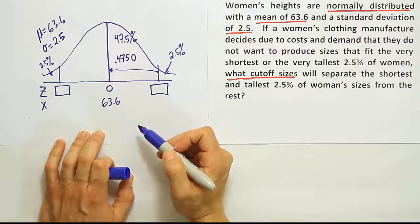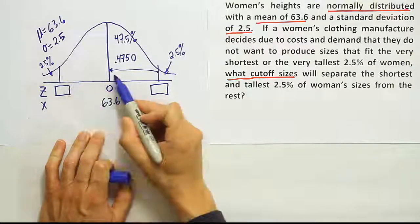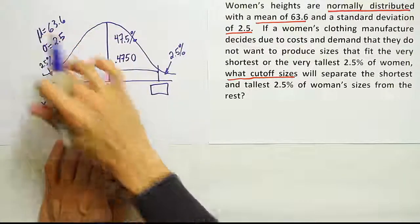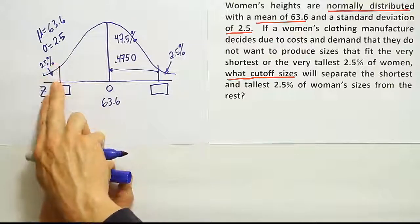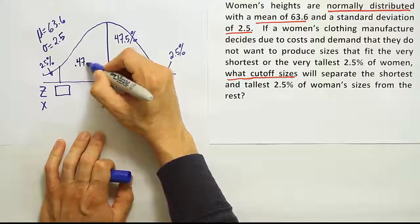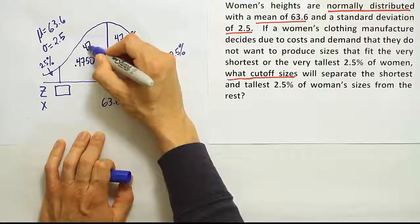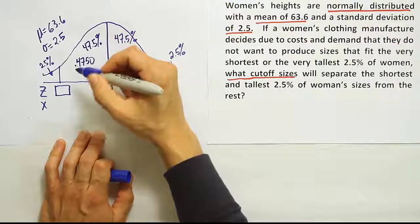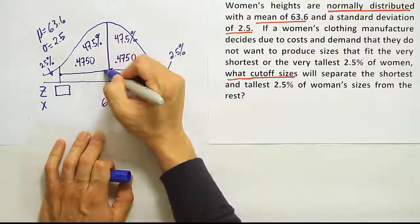Now the same logic applies on the left-hand side. It's also from here to here, 0.4750, because half of the curve is 50. If 2.5% is in that lower tail, the remaining amount must be 0.4750. So that's also 47.5%. That means from here to here, it must be that same number.